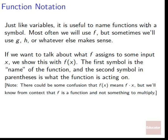If we want to talk about what f assigns to some input x — where x is the element in our first set — then it will be assigned to f of x: f acting on x, what f spits out when given x. The first symbol is the name of the function. The symbol in parentheses is what the function is acting on. So f of x — taken together — is the name of what comes out. The thing inside the parentheses is what is being acted on, and the whole thing is the output.